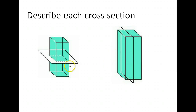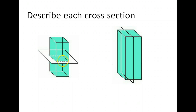When they ask about a cross-section, what they're doing is taking a plane and slicing it through a figure — either up and down, side to side, or diagonally — and the cross-section is: if you cut right there, what shape are you getting?